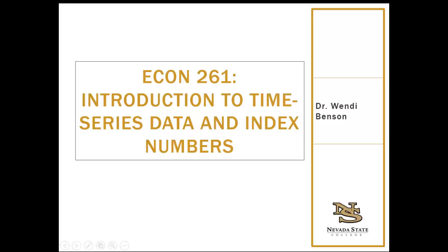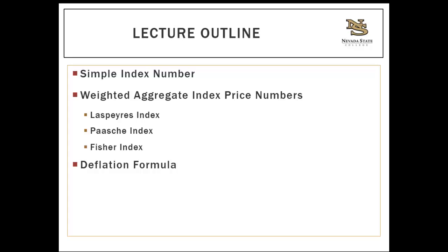This lecture is about time series data and how it can be used to calculate index numbers to compare values across time. It covers simple index numbers, which assess changes in values for a single item across time. The bulk of the lecture focuses on weighted aggregate index price numbers, such as the Laspeyres index, the Paasche index, and the Fisher index. The deflation formula uses an index number to figure out how much a value in the past would be worth today.